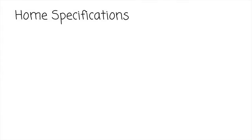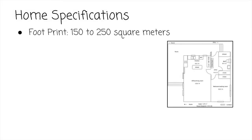Before you design our home, I wanted to share some of the specifications I would like to see in the new home. First, we would like the home to have a footprint of 150 to 250 square meters. The footprint is the area of the home site defined by the perimeter of the building plan.